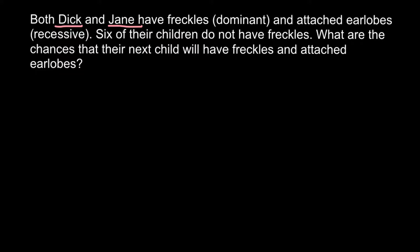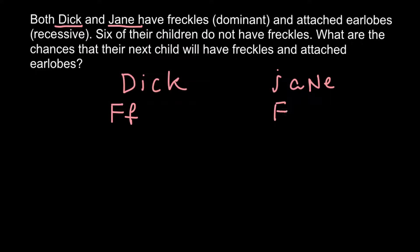First of all, let's put down the genotype of both Dick and Jane. We know that this couple has six children that do not have freckles, and both Dick and Jane have freckles. Since freckles is a dominant trait, this tells us that both Dick and Jane are heterozygous for this trait — their genotype is capital F and small f. Both of them have to be heterozygous. As for the second trait, they have attached earlobes, which is a recessive trait. In order to show this phenotype, both of them have to be small e, small e — homozygous recessive for this trait.